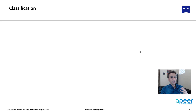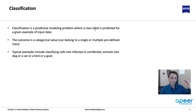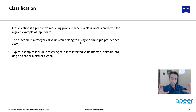Moving on to classification — at a high level, classification is a predictive modeling problem where a class label is predicted. Is this a dog? Is this a cat? It's not a continuous numeric value we're predicting; the outcome is a categorical value, meaning it belongs to one or multiple predefined classes. This is a finite set of classes — unlike regression, where the outcome can be any continuous numerical value.